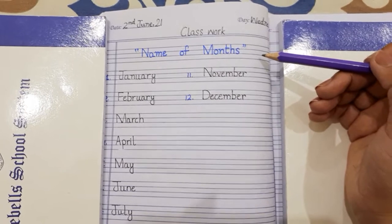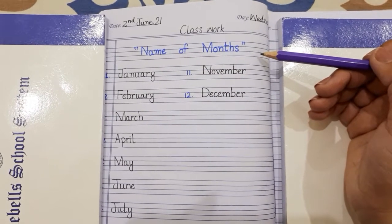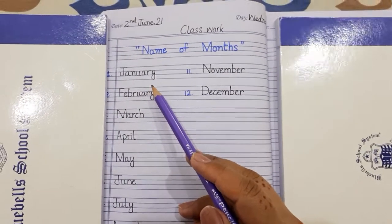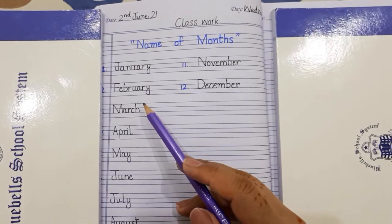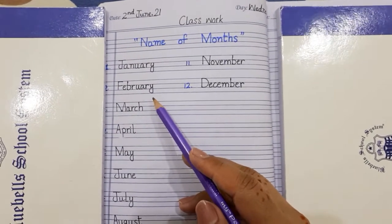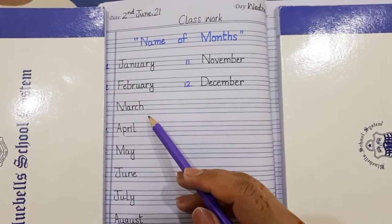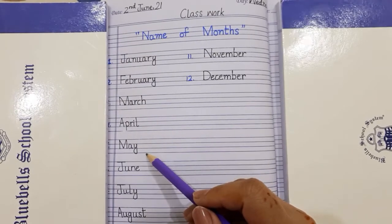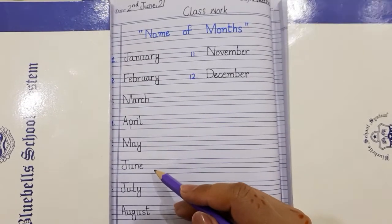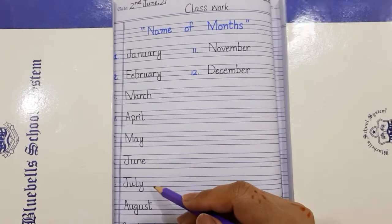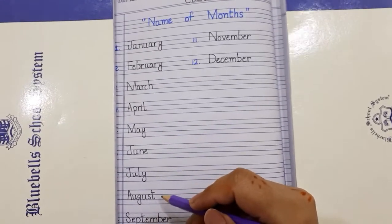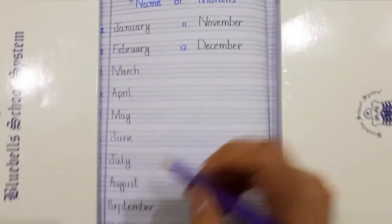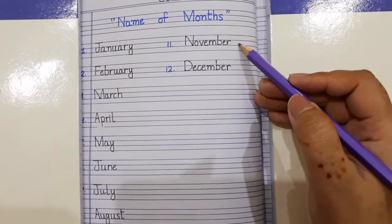Today's topic is name of months. The months are: January, February, March, April, May, June, July, August, September, October, November, December.